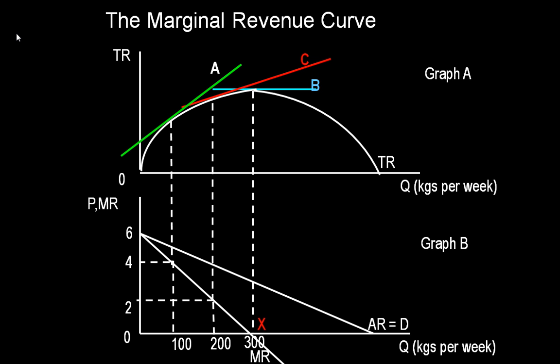Thus, the value of tangent A at 100 kilograms, the marginal revenue at 100 kilograms, is equal to four pounds. At 300 kilograms sold, the slope of tangent B is zero, and so marginal revenue equals zero. Tangent C is an intermediate position. The value of tangent C, or marginal revenue at 200 kilograms, is two pounds. So the slope of the total revenue curve depicts marginal revenue.